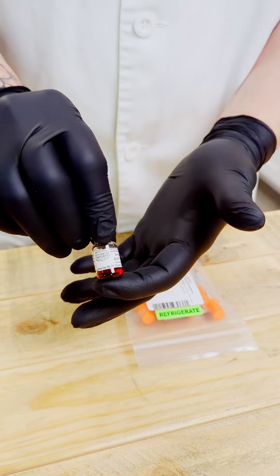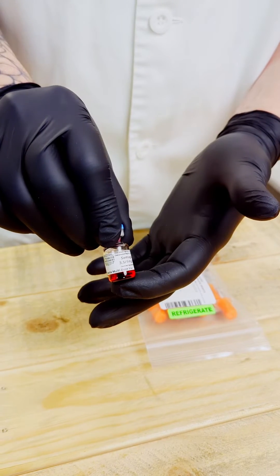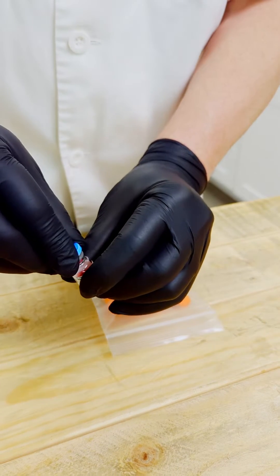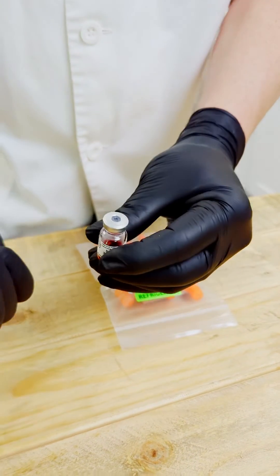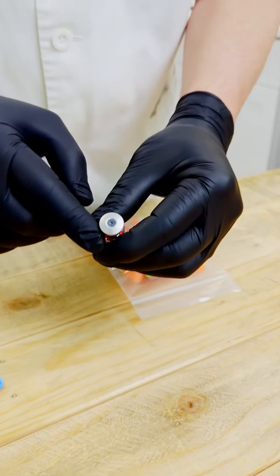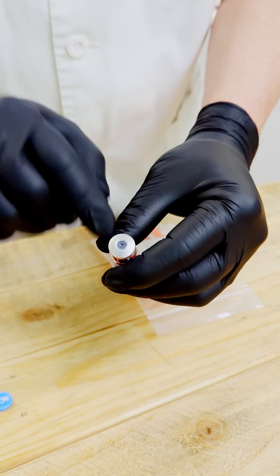So, this is the vial that we will give to you. We'll have different concentrations, just a sample one. When you first get it, you'll have a cap on it and you want to take that blue cap off, just like that. And that exposes this top part here, which is where we put the needle through.